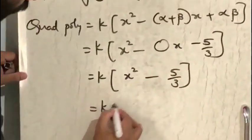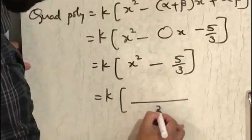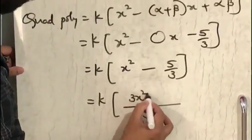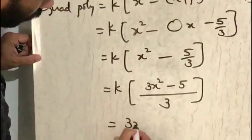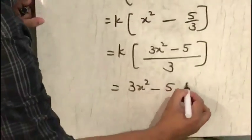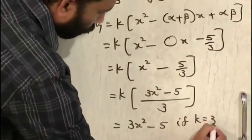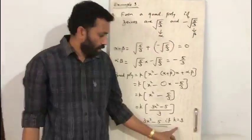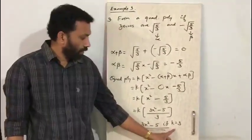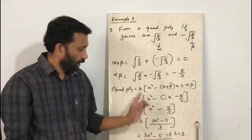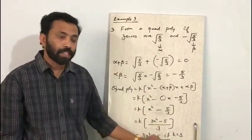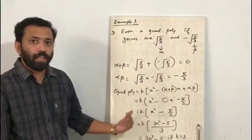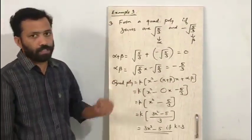Taking LCM as 3, the polynomial becomes 3x squared minus 5, when k is equal to 3. So in Example 1 k was 1, in Example 2 k was 2, and in Example 3 k is 3 — confirming that k can be any non-zero constant.